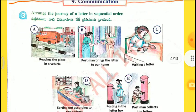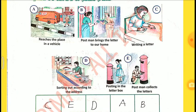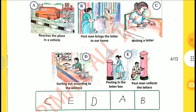3rd one — Arrange the journey of a letter in sequential order. C is the first one: Writing a letter. 2nd one is E: Posting in the letter box. Postman collects the letters. 3rd one is D: Sort out according to the address. 4th one is A: Reaches the place in a vehicle. 5th one is B: Postman brings the letter to our home.